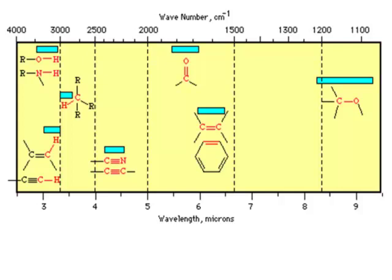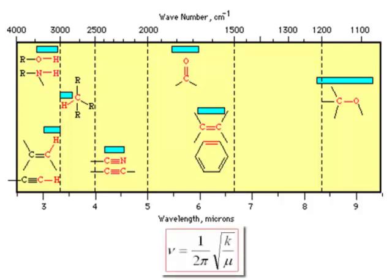Up here above 3000 wave numbers, or around 3000 wave numbers, we see lots of CH stretches. The CH bond is relatively strong, and the H atom is very light. So that, according to the equation that we were working out yesterday, corresponds to a high frequency of vibration. So that appears around about the 3000 wave number region.